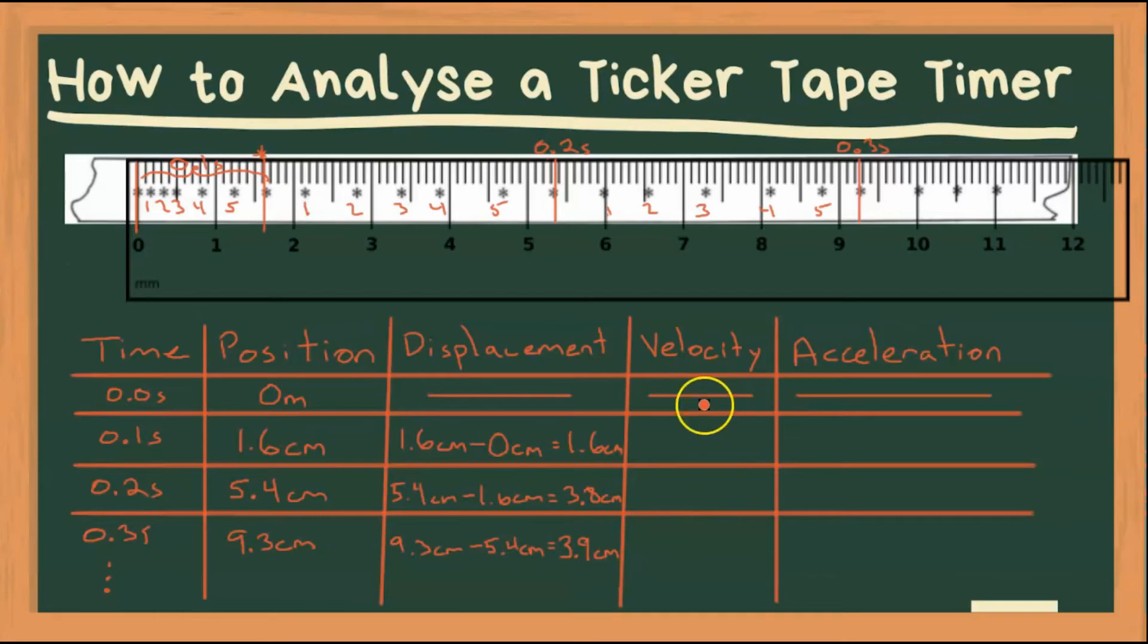All right, well let's look at velocity. So velocity is displacement over time. Our displacement is 1.6 centimeters and it took a total of 0.1 seconds to undergo that displacement, so our velocity then is going to be 1.6 centimeters divided by 0.1 seconds, which is equal to 16 centimeters per second.